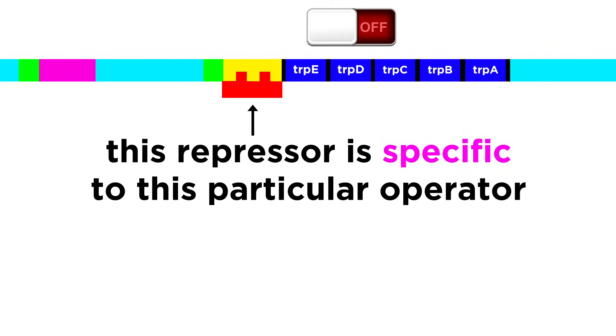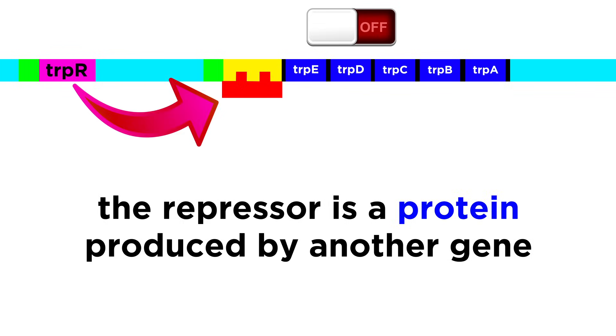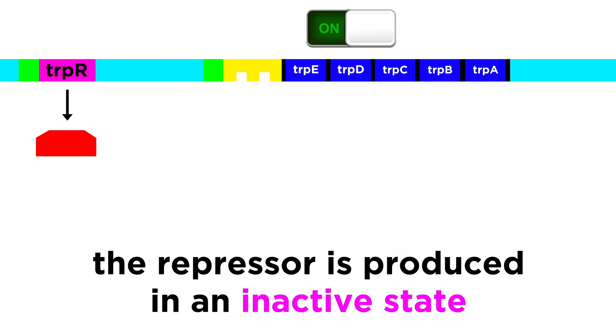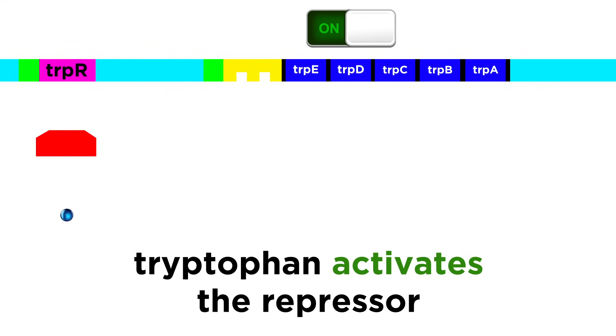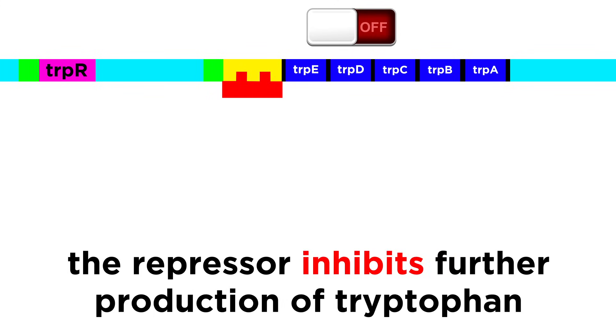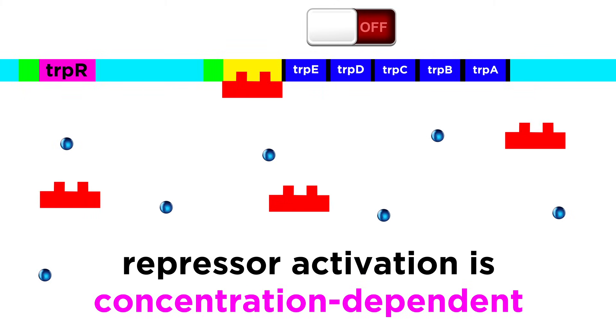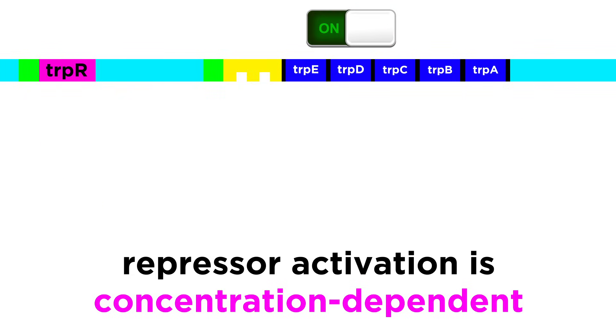This repressor is specific to this particular operator, so it doesn't do anything to other genes, and it is a protein, which is a product of a different gene somewhere else in the DNA. This tryptophan-specific repressor is produced regularly, but in an inactive state that has little affinity for the operator. When tryptophan binds to the active site of the repressor, it changes shape to become an active form that has much more affinity for the operator, so it will bind and stay on for quite some time, thus turning the operon off, inhibiting gene expression, and limiting further tryptophan production. The more tryptophan there is in the cell, the more repressors that will be activated to inhibit gene expression. The less tryptophan there is, the less inhibition there will be.